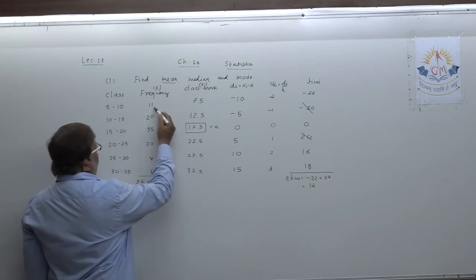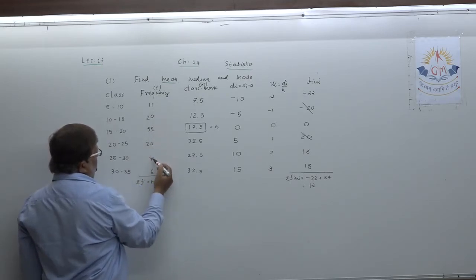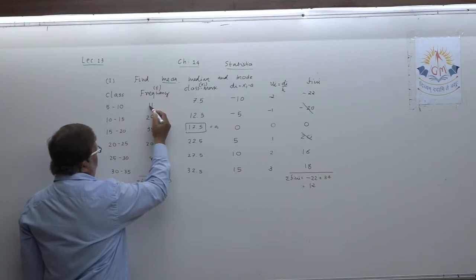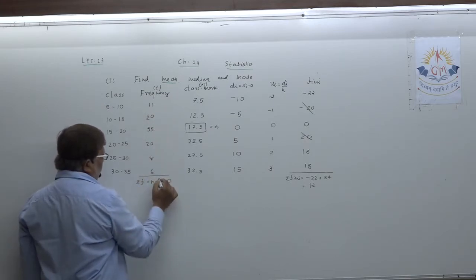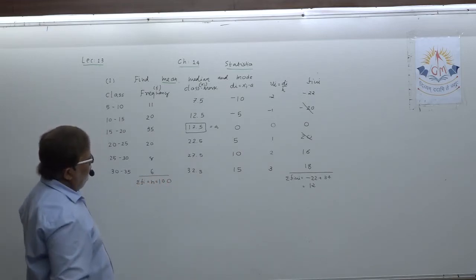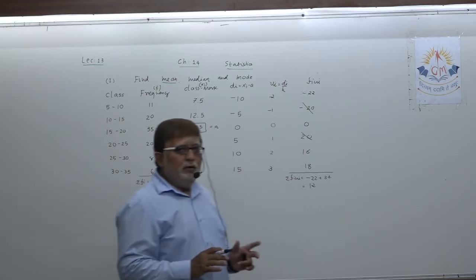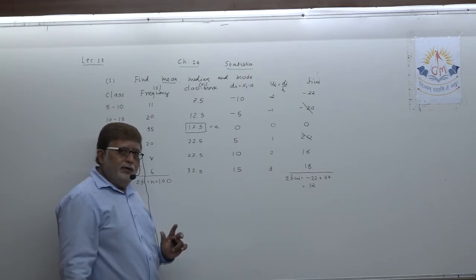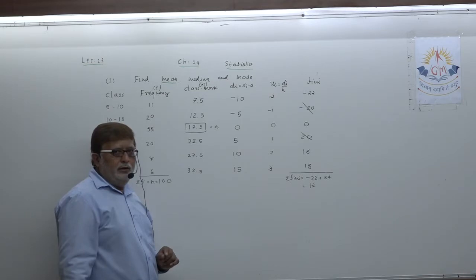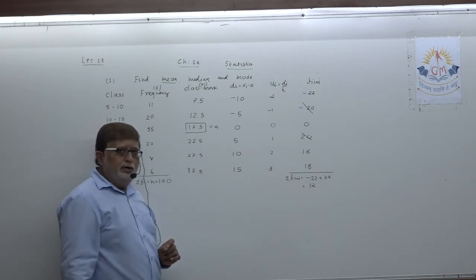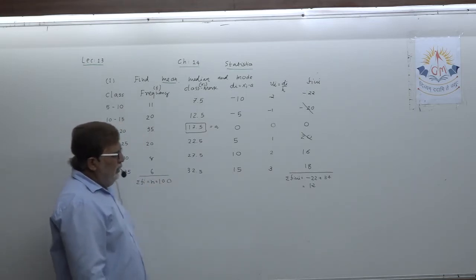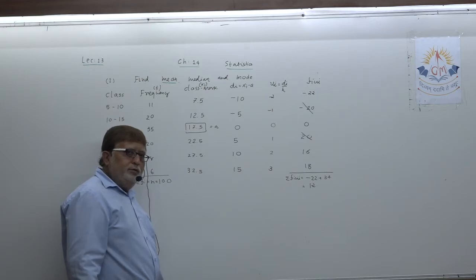These are the columns you require whenever you have to find mean: column of Xi (class mark), column of Di, column of Ui, and column of Fi·Ui. Now let us calculate mean: X̄ = A + (Sigma Fi·Ui / Sigma Fi) × H. A is 17.5, Sigma Fi·Ui is 12, Sigma Fi is 100, H is 5. After cancellation: 17.5 + 0.6 = 18.1. Mean has been found out.